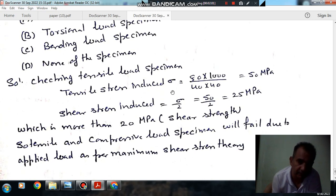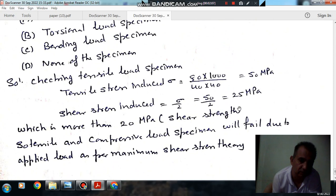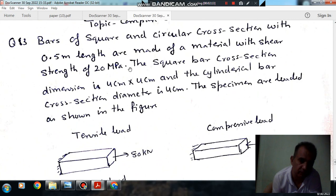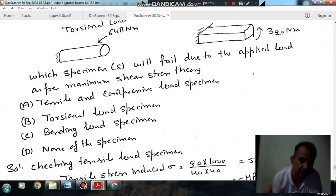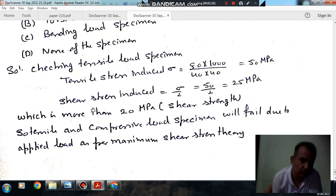In both the tensile load specimen and the compressive load specimen, the shear stress induced is 25 MPa, which is more than the shear strength of 20 MPa. Therefore, these specimens will fail. No need to check further - the answer is option A: the tensile and compressive load specimens will fail as per maximum shear stress theory.